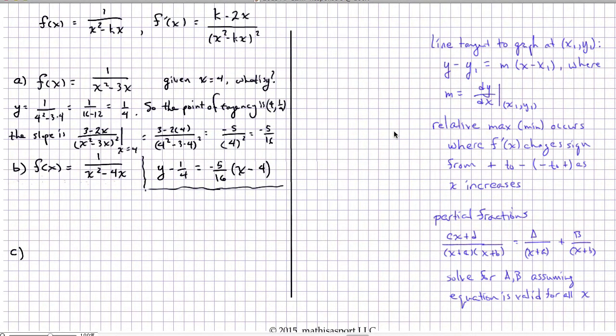In part B, we have to determine whether the function has a relative min, max, or neither at x equals 2. As I've written in blue to the right, relative mins and maxes occur simply where f prime changes sign. So let's just write, first of all, we know what f prime is. f prime of x equals 4 minus 2x over x squared minus 4x, that quantity squared.